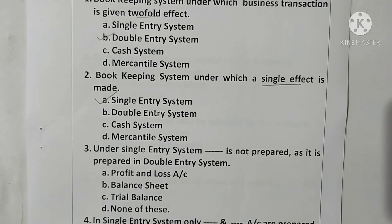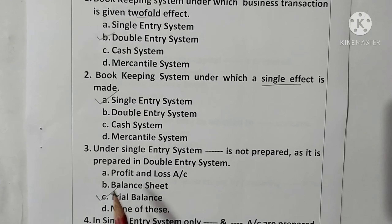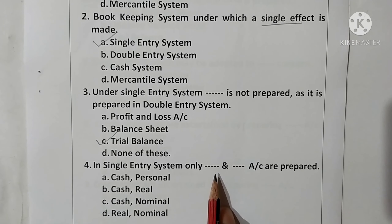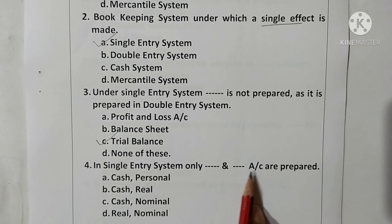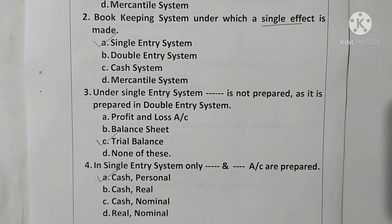Question 3: Under the single entry system, the trial balance is not prepared, as it is prepared in the double entry system. Option C is correct. Question 4: In the single entry system, only cash and personal accounts are prepared. Option A is correct.